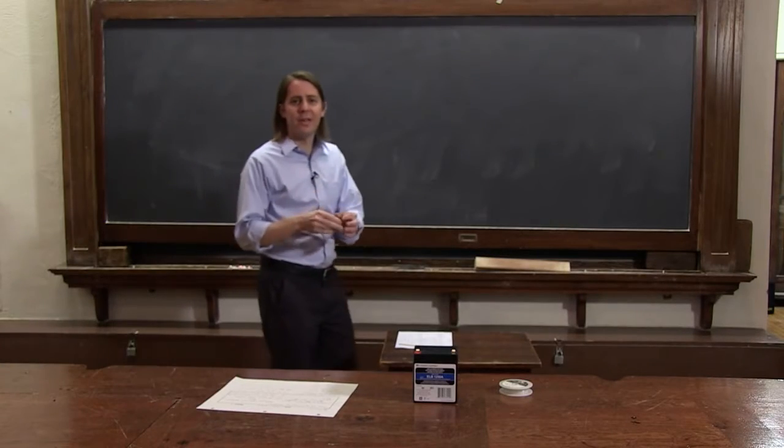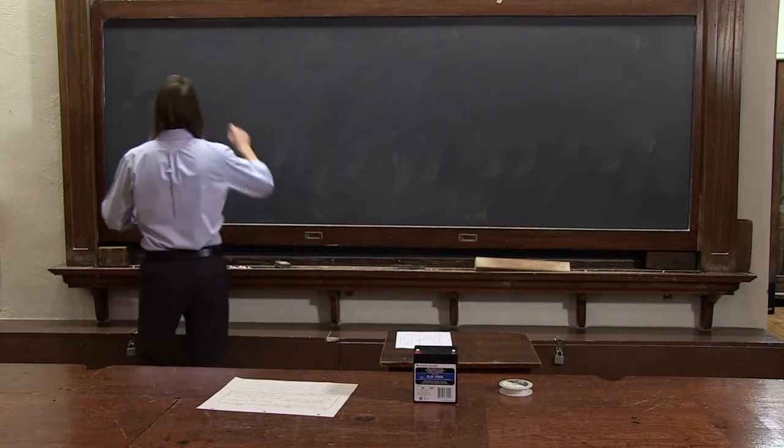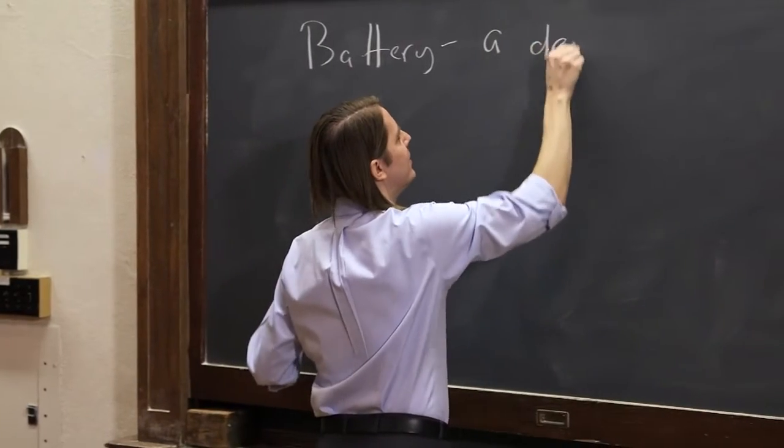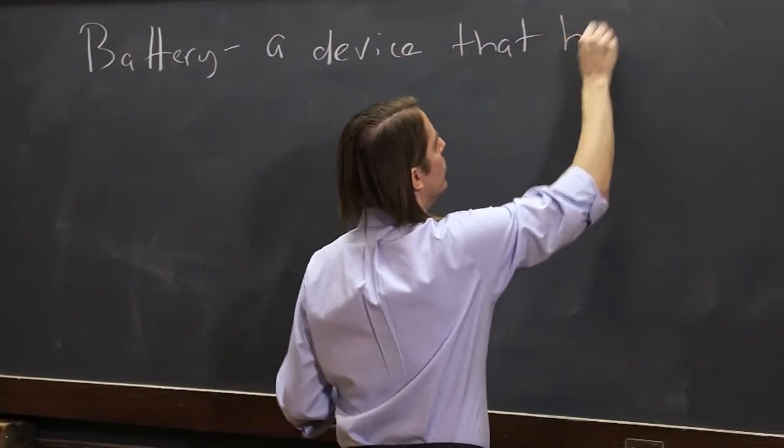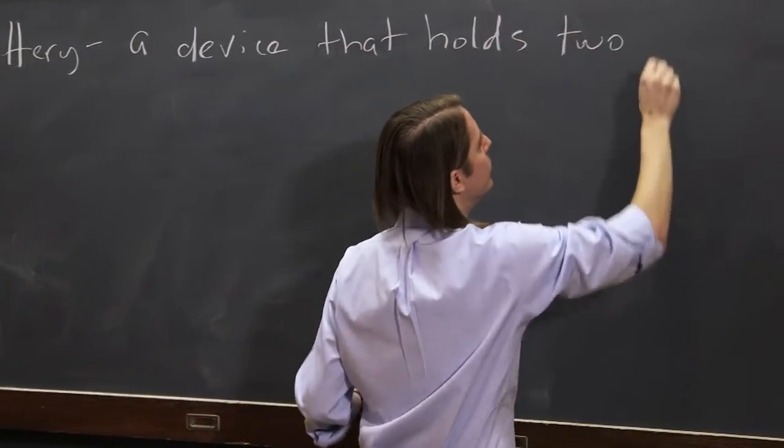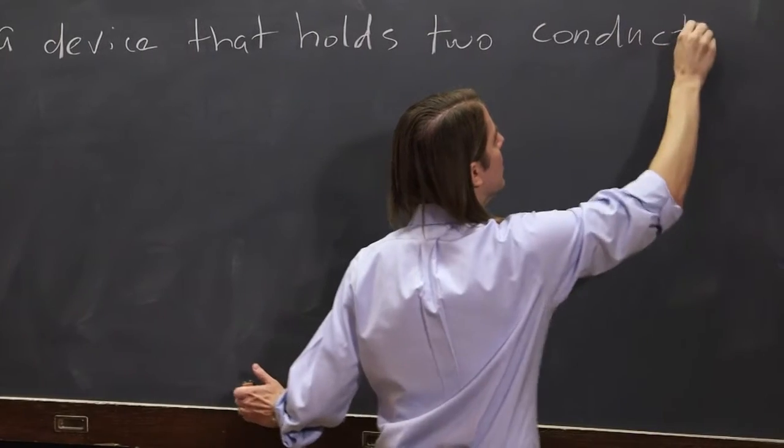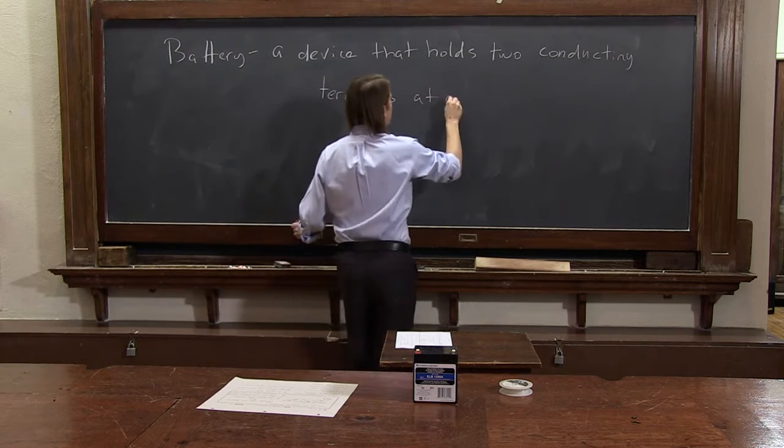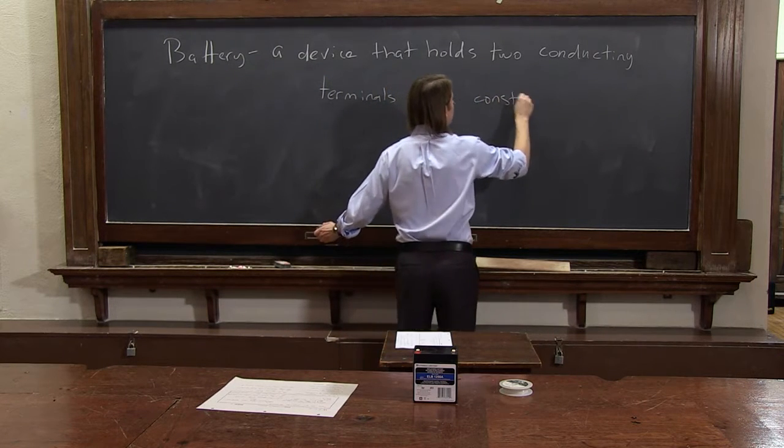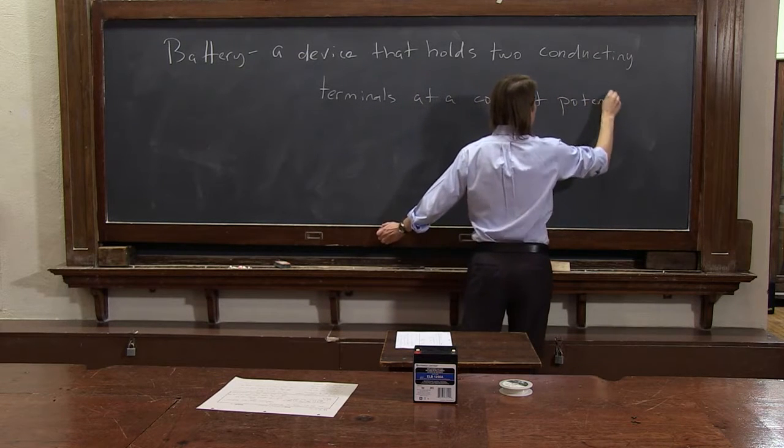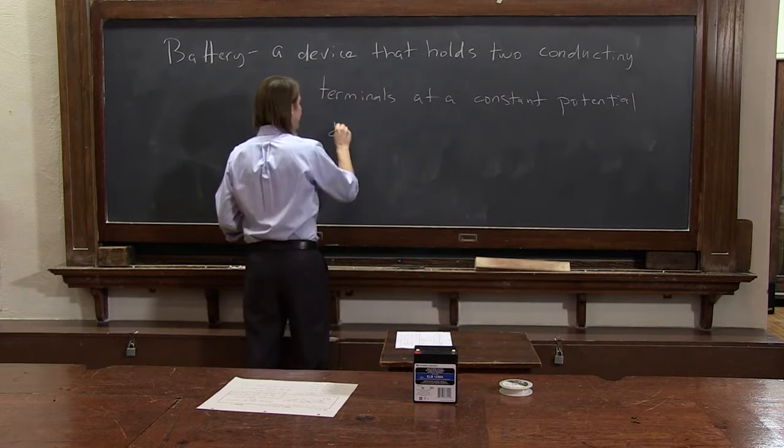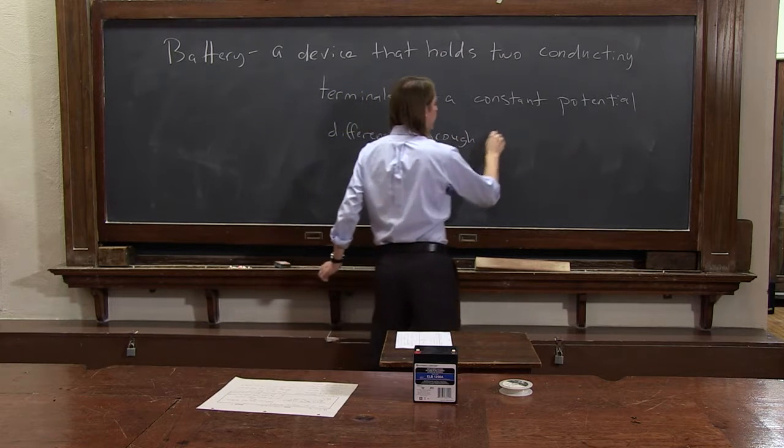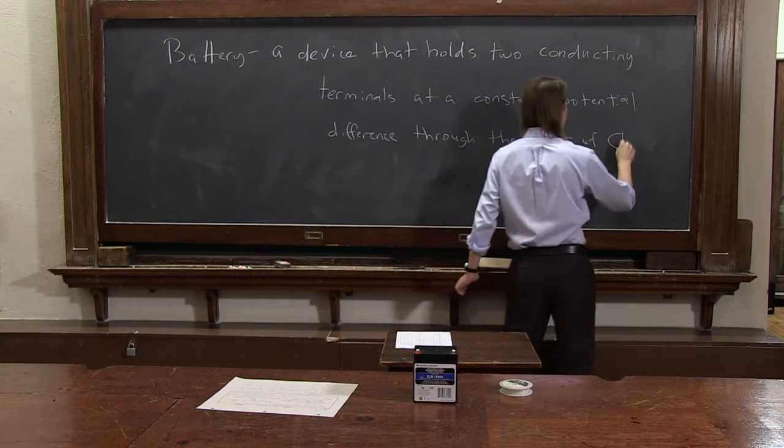Another circuit object to talk about is battery. Let's define the battery. So a battery is a device that holds two conducting terminals at a constant potential difference through the power of chemistry.